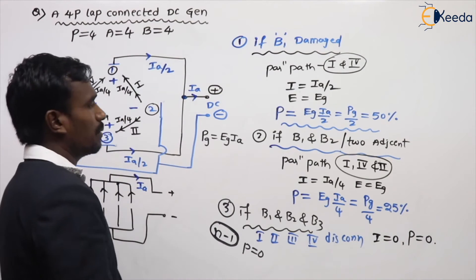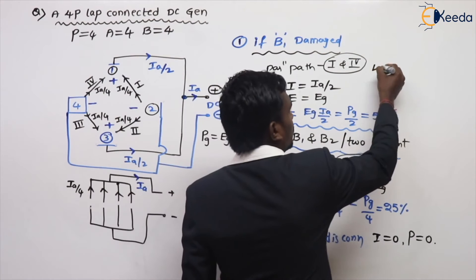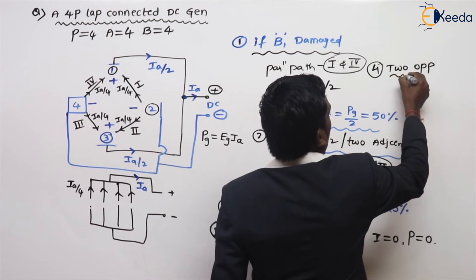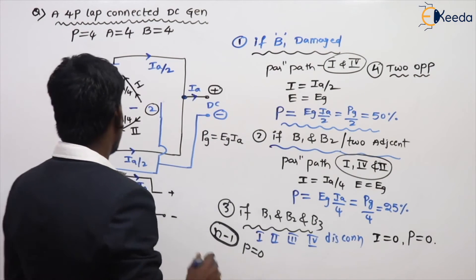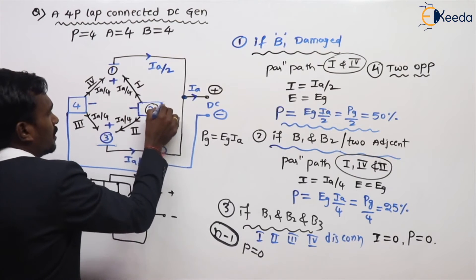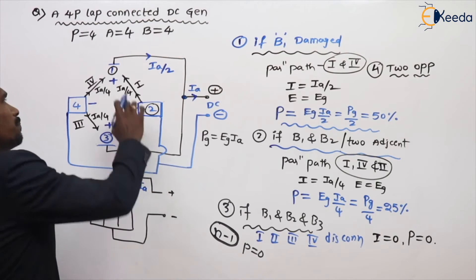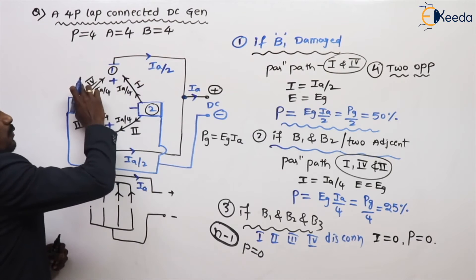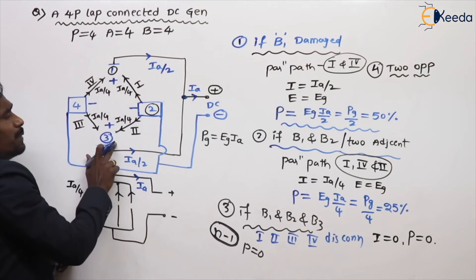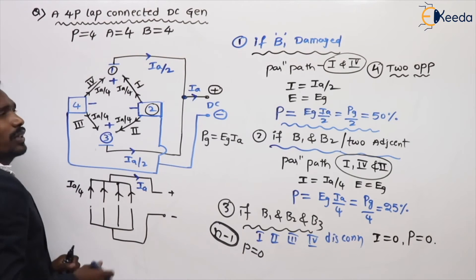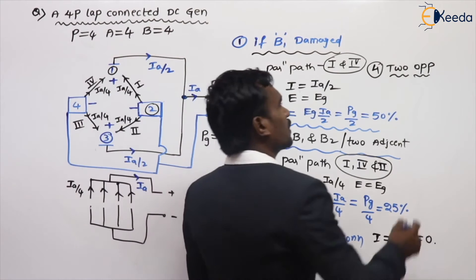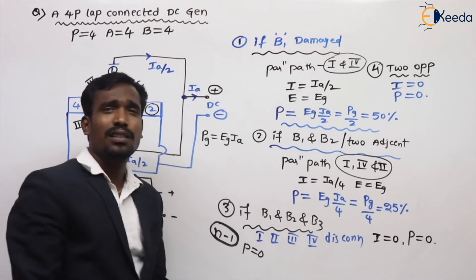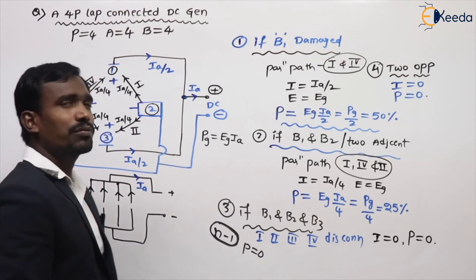Next, the special fourth case: if two opposite brushes are damaged, what happens? For example, brush 1 damage eliminates parallel paths 1 and 4; brush 3 damage eliminates parallel paths 2 and 3. In a four-pole machine, if two opposite brushes are damaged, the current is 0 and the power developed is also 0. This is the concept for a four-pole machine.